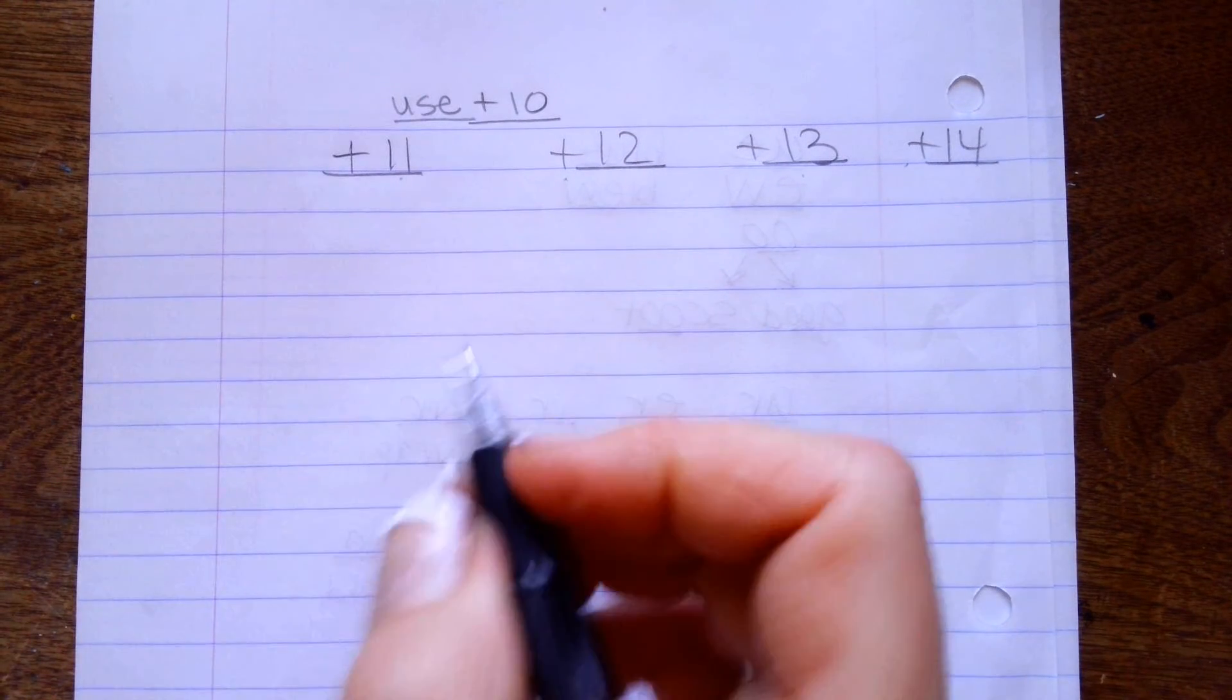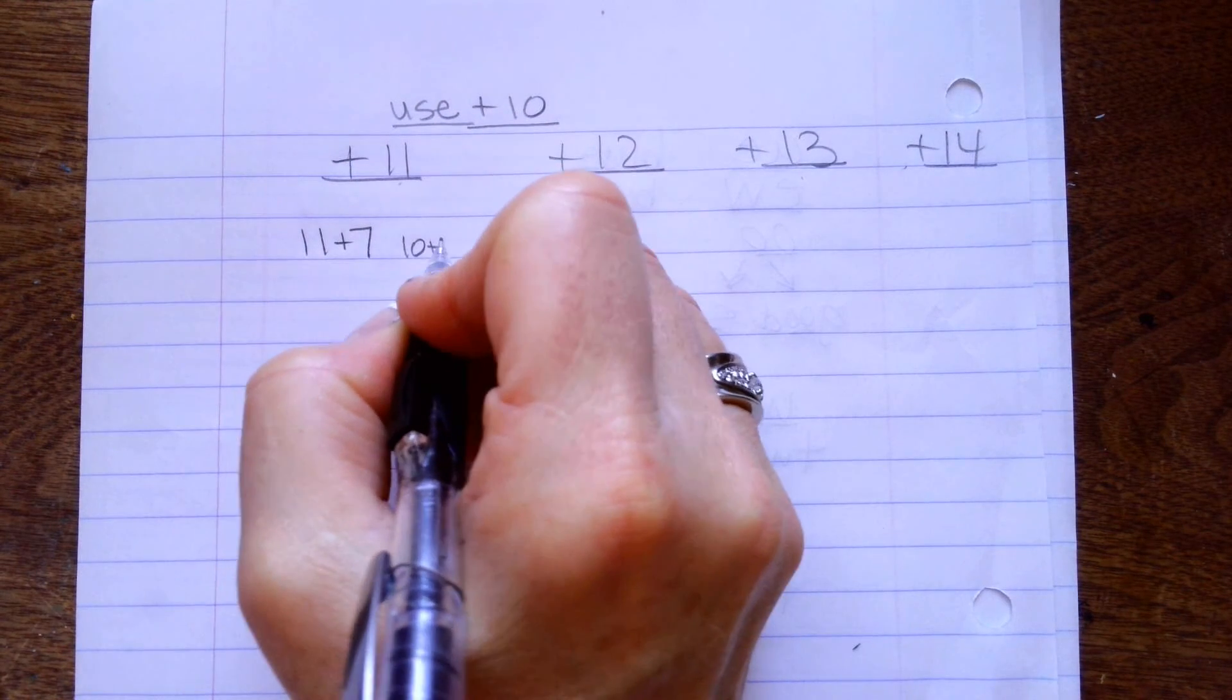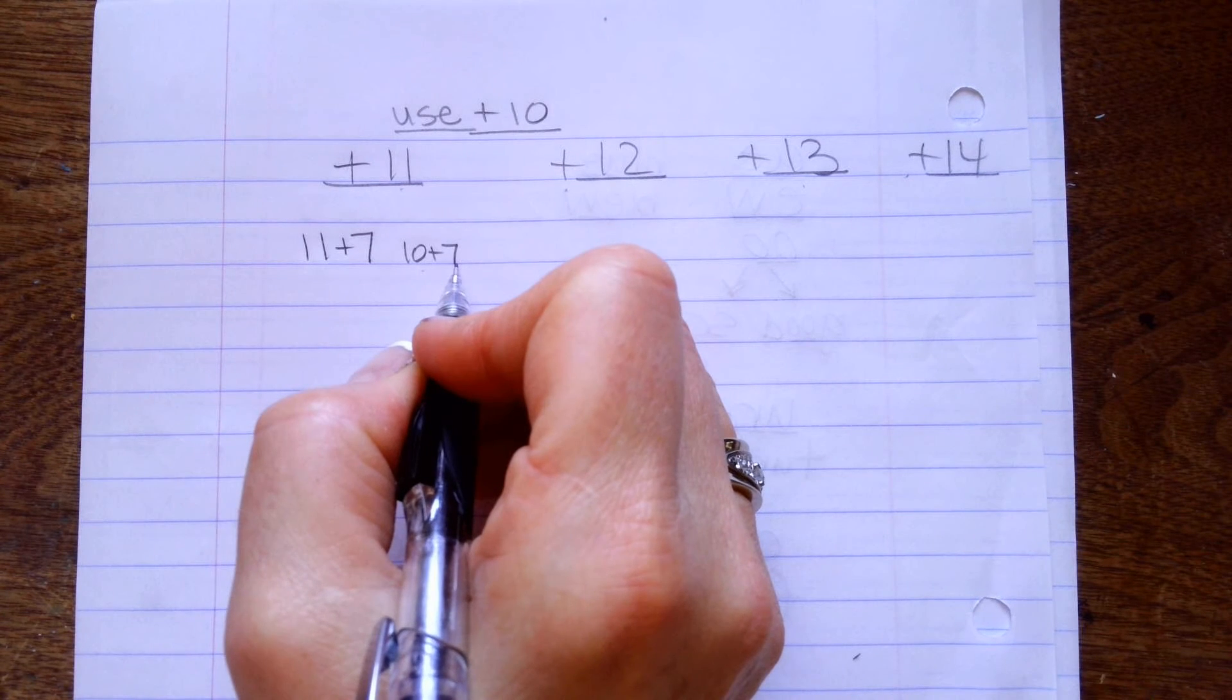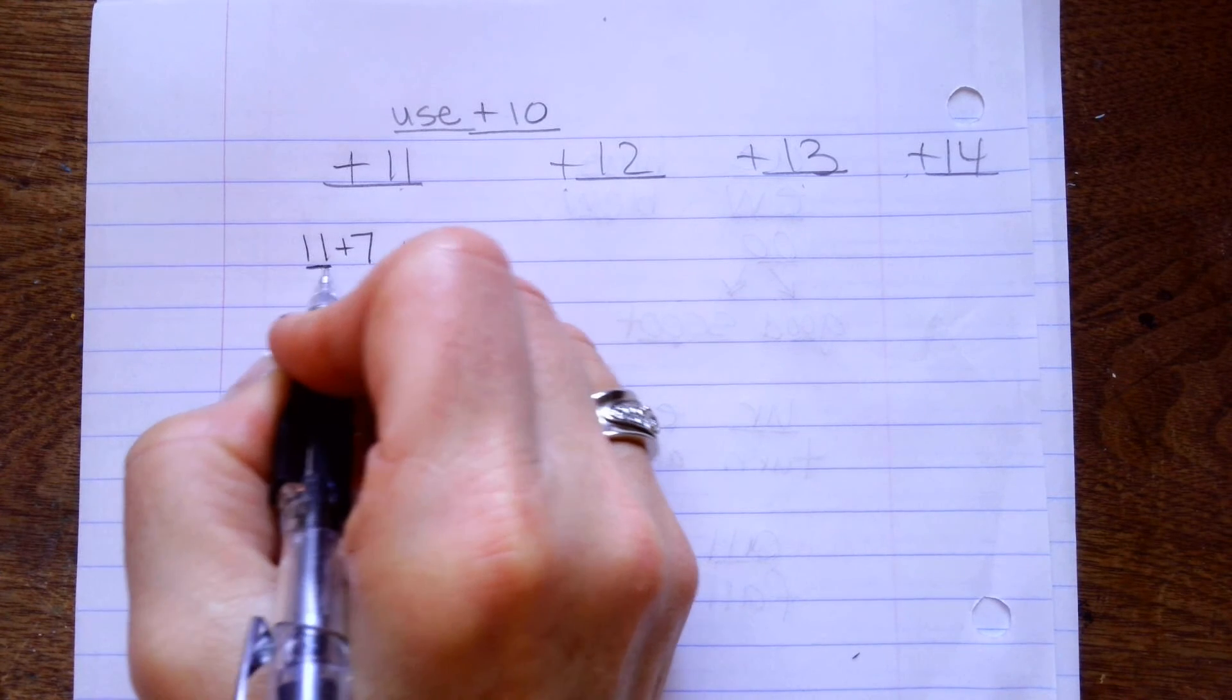So, for example, if I have 11 plus 7, I'm going to change it into a 10 plus 7 because 10 plus 7 is really easy for me to work with.